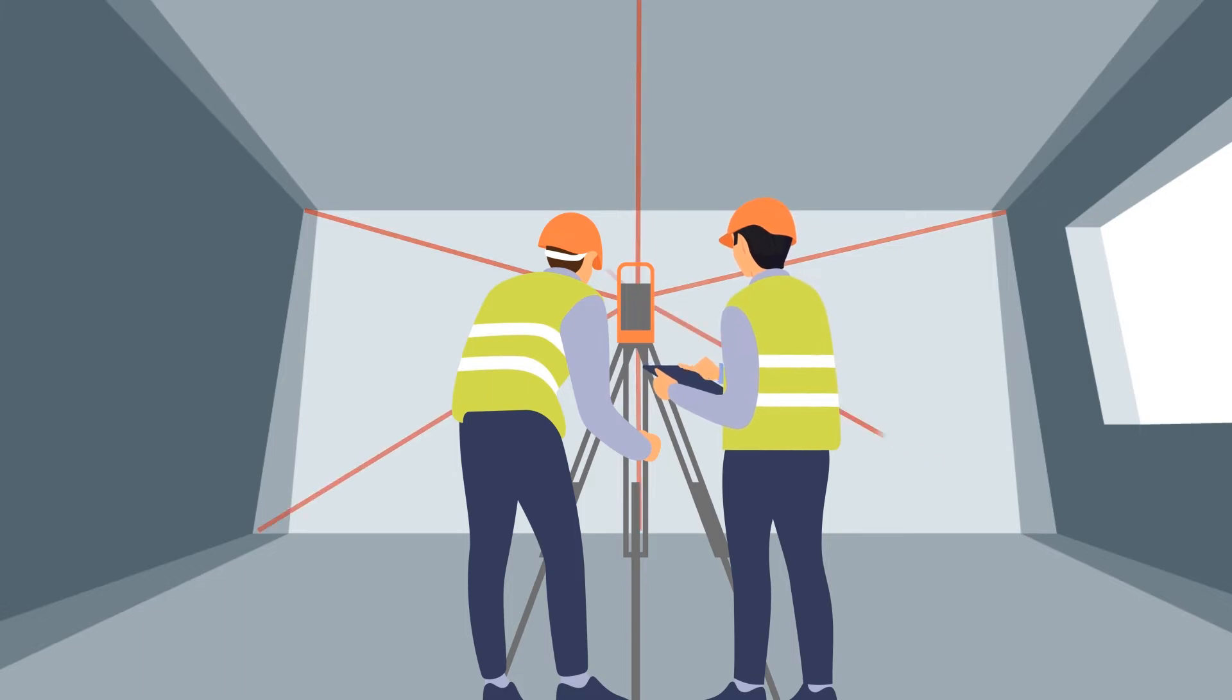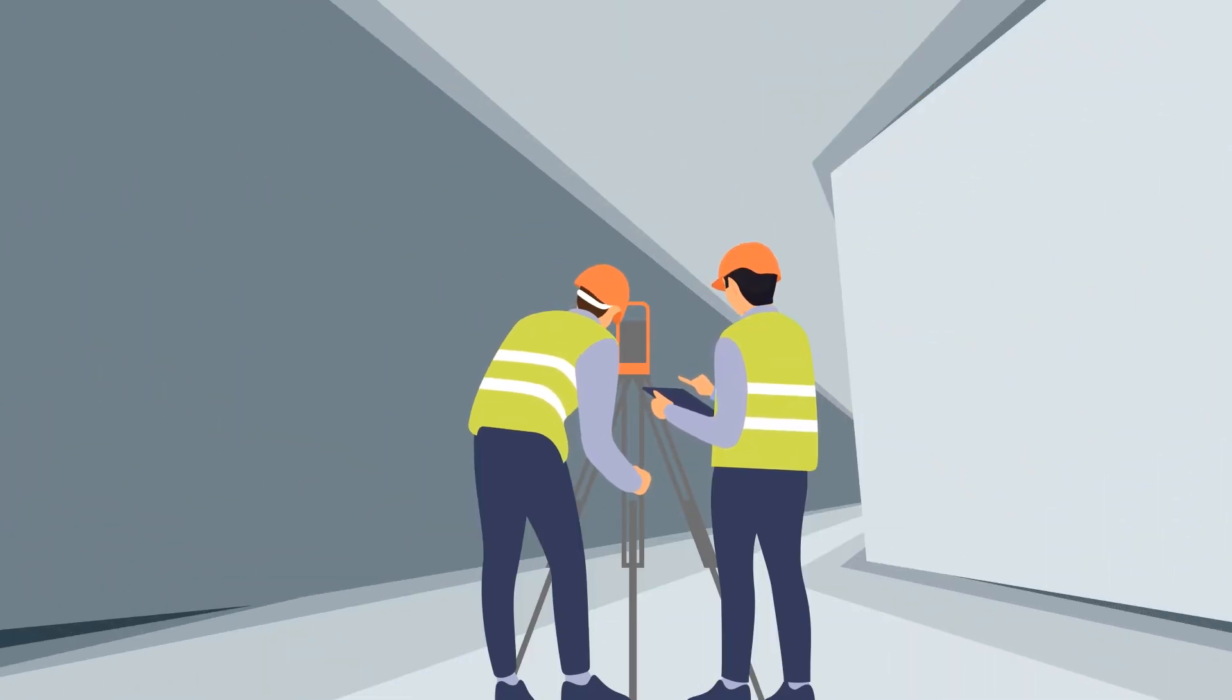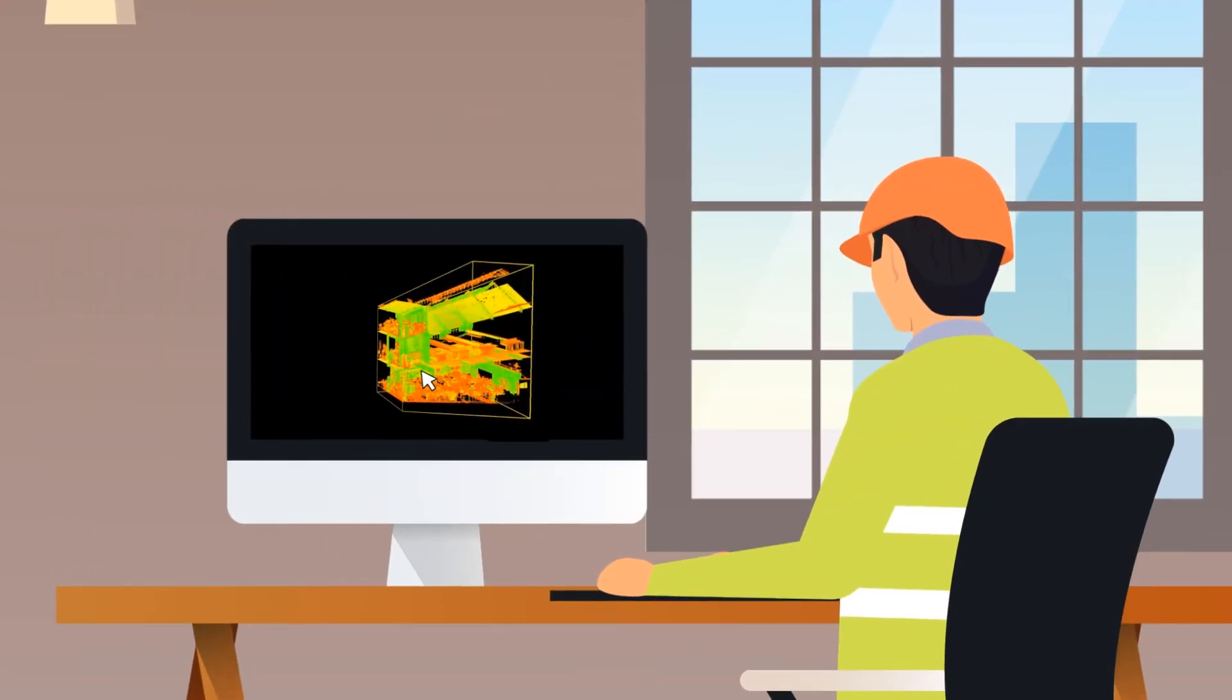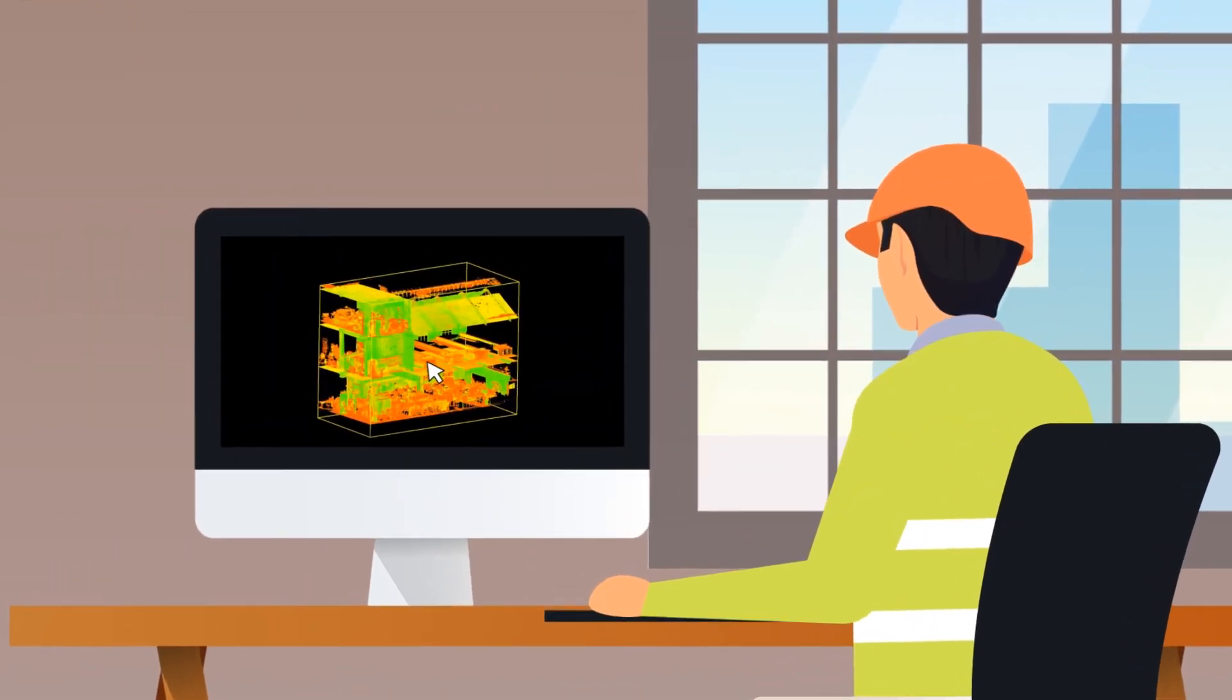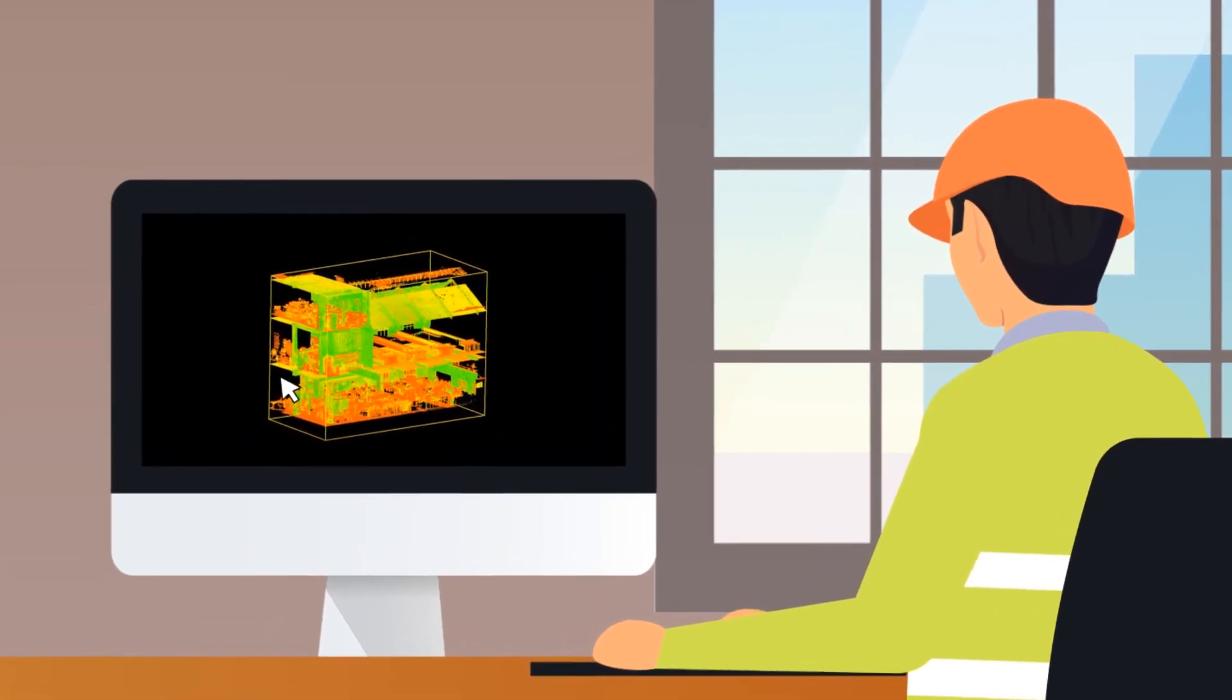The building is surveyed on site by the VMS surveying team. When surveying a building, VMS scans the entire building with the laser scanner. Once the work is completed, the surveyors return to the office and evaluate the scans taken on site into a complete point cloud.